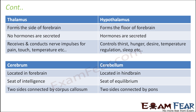Next is thalamus and hypothalamus. Both are parts of the forebrain. Thalamus forms the side of the forebrain and hypothalamus forms the floor of the forebrain. Hypothalamus basically denotes the end of the forebrain, after which the midbrain starts. Thalamus does not secrete any hormones, but hypothalamus secretes a lot of hormones, which we will look at in the next lesson on endocrine system. Hypothalamus acts as a link between the endocrine system and the nervous system.